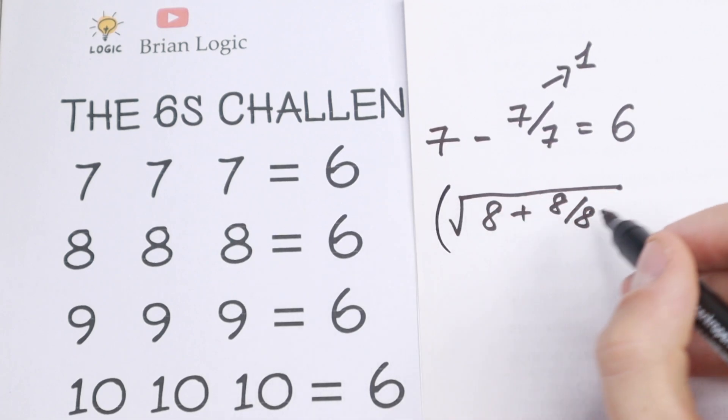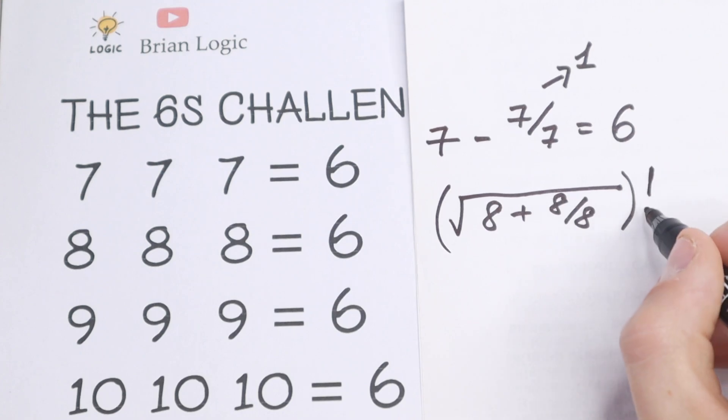Right here it is hard to create 6 in an obvious way. We need to write square root of 8 plus 8 over 8. And if we take this square root we will have 8 plus 1, we will have 9. Square root of 9 equals 3. And moreover if we take factorial we will have 3 factorial which is equal to 6, because we know that 3 factorial equals 6.